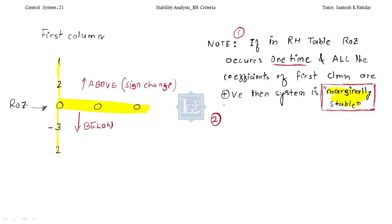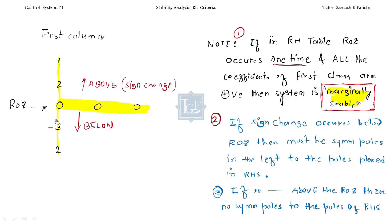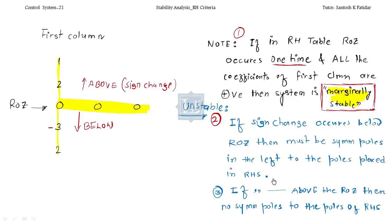Condition 2: if sign change occurs below the ROZ, definitely the system will be unstable — this is the 100% condition. In both these cases your system will be unstable. Furthermore, if the sign is changing below the ROZ, there must be symmetric poles in the left corresponding to the poles placed in the RHS.